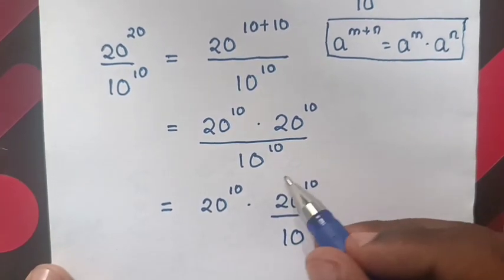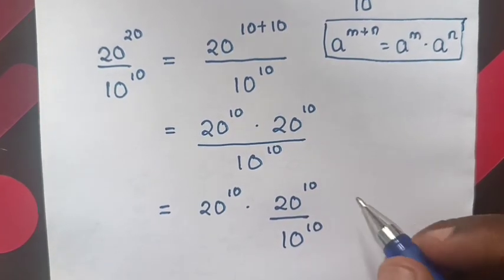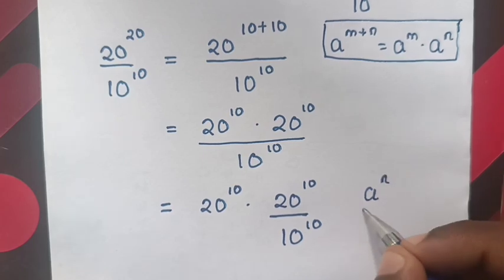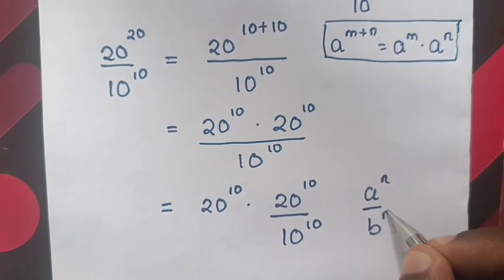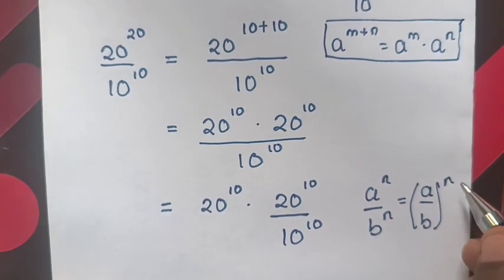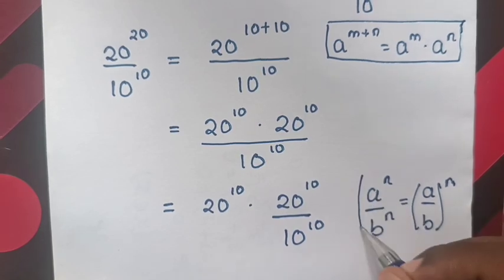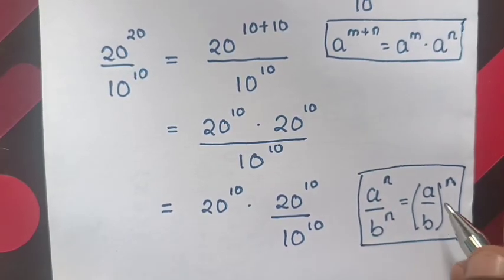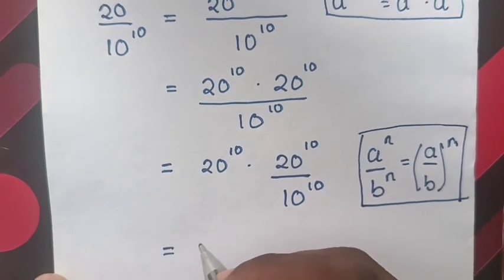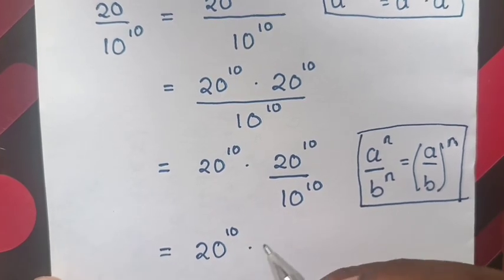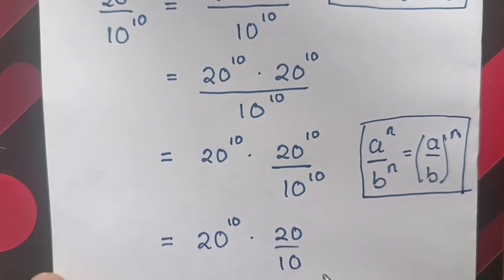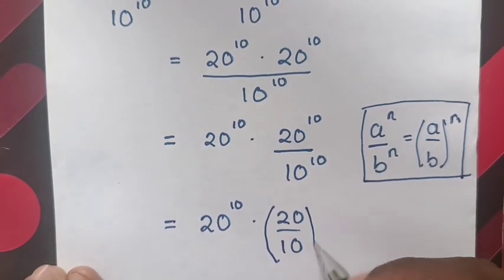Now, here we will apply the exponential rule that a power n over b power n is equal to a over b, bracket, power n. So, this will be equal to 20 power 10 times 20 over 10, bracket power of 10.